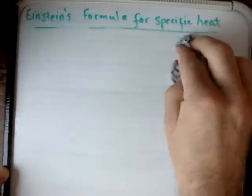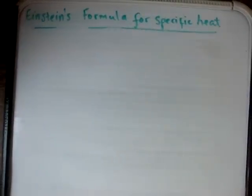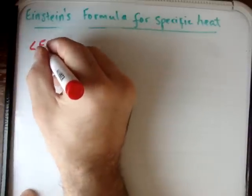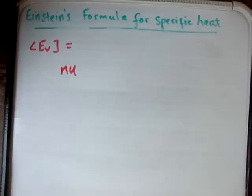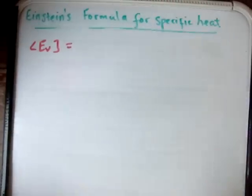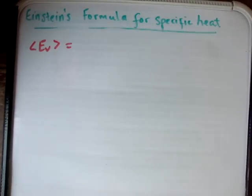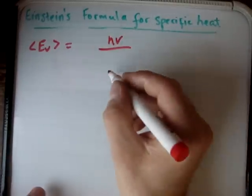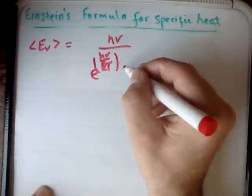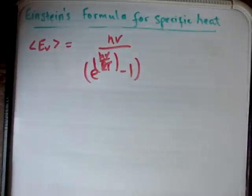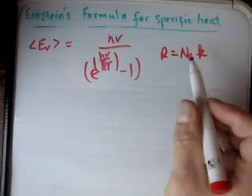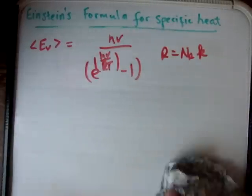The next thing we need is Max Planck's formula for the average energy in a quantized system. Max Planck said the average energy per unit frequency ν is given by h times the frequency, divided by e to the power of h·ν over kT, minus 1. Here k is Boltzmann's constant — not the same as the molecular gas constant k in the ideal gas equation.